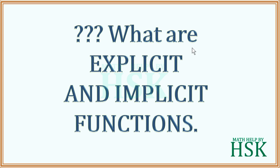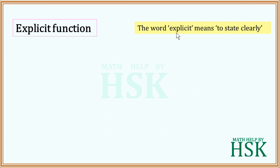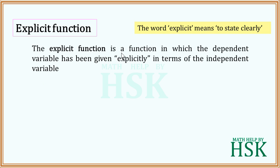In this video we are going to study what are explicit and implicit functions. To begin with, the word 'explicit' means to state clearly. So an explicit function is a function in which the dependent variable has been explicitly — that means clearly — stated in terms of an independent variable.